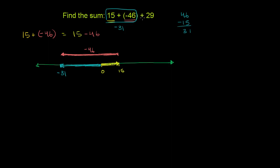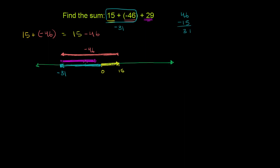We know that this first part is negative 31. And then to that we are going to add 29. That means we're going to start at negative 31 and move 29 to the right — we're adding 29, so we move 29 to the right. We're going to move 29 over to the right. That's the positive 29 part.